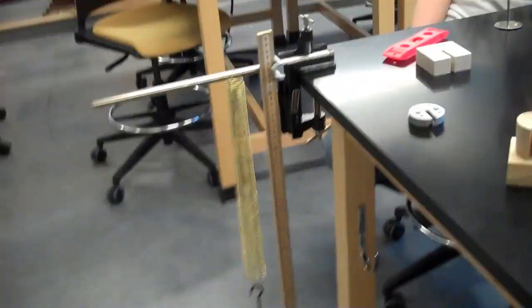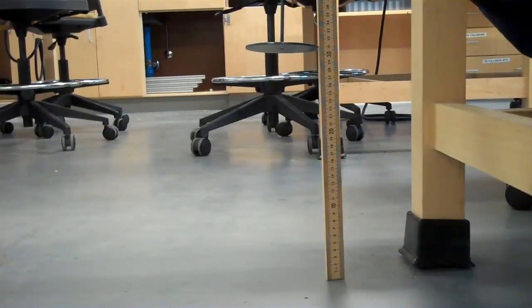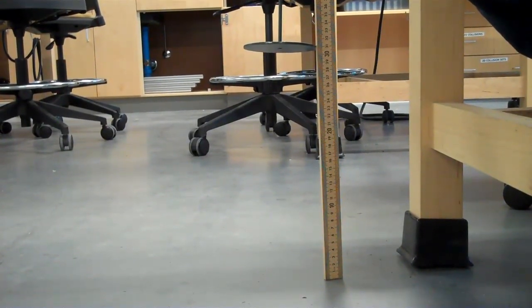So here we have a hanger attached to the end of a long spring. And you'll notice that with no mass on the hanger that it's hanging at about 30.6 cm off the ground.